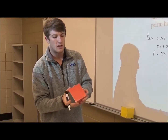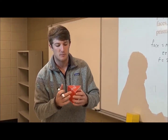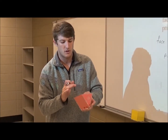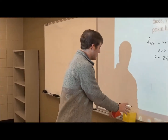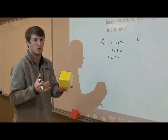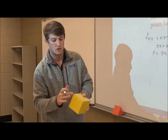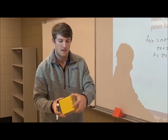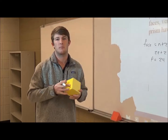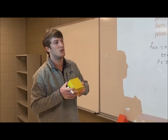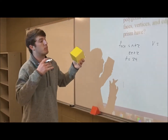For the vertices, if you look at this triangular prism again, the vertices are all the points right here. There's a little formula we have for this one. This triangular prism has six vertices. If we look at our cube, it has eight vertices.